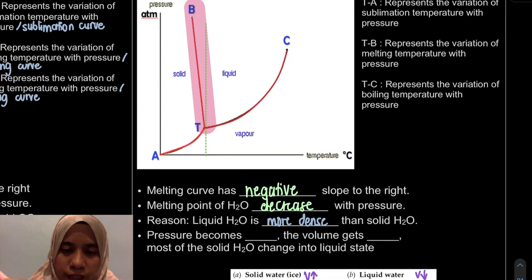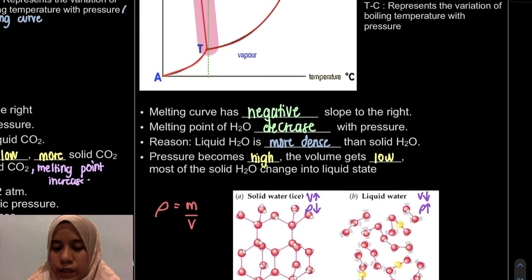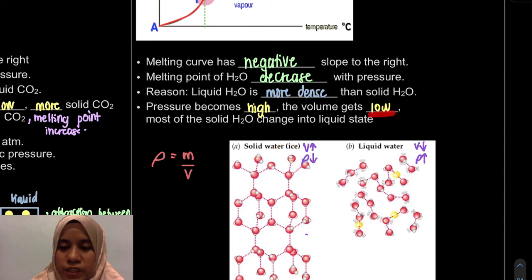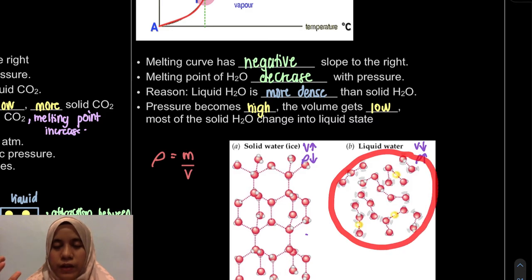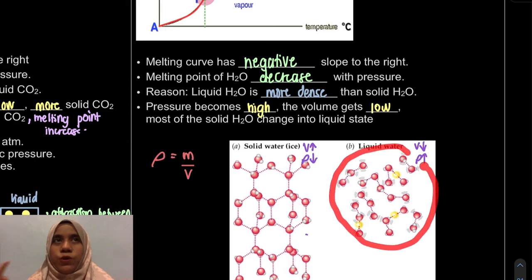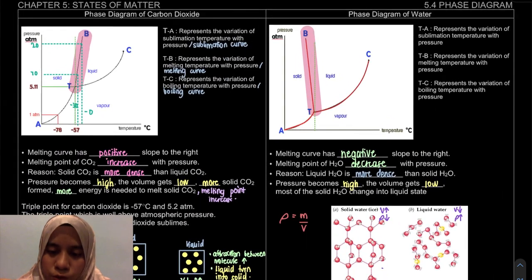For the melting curve, we consider increasing pressure. When pressure becomes high, volume will get low. When volume is low, the solid molecules will change into liquid state. In this case, we don't even need to supply energy for it to become liquid — it will convert to liquid on its own. So the melting point decreases with pressure.